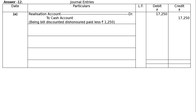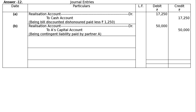Part B: There was a contingent liability in respect of a claim for damages of Rs 75,000. This liability was settled for Rs 50,000 and paid by partner A. Journal entry: Realization Account debited and A's Capital Account credited for Rs 50,000, being contingent liability for damages paid by partner A.